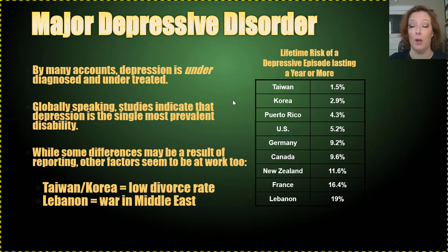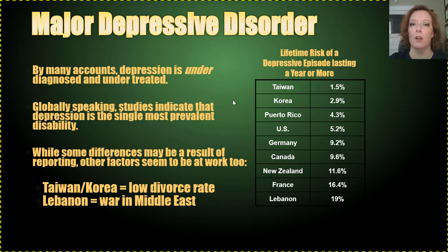Looking at the chart on the right of your screen showing the lifetime risk of a depressive episode lasting a year or more across several countries — the U.S. is kind of in the middle. In countries where there is a lower divorce rate, you also see a corresponding lower risk of having a depressive episode lasting a year or more. On the other hand, in regions where there is consistent war, you see an increase in lifetime risk of having a depressive episode. So those cultural and environmental influences are definitely at play here.